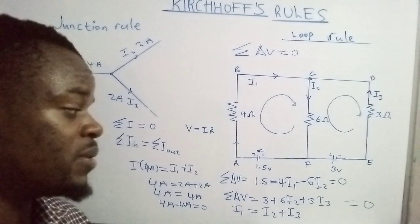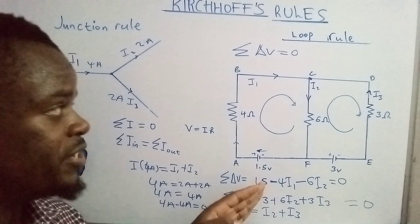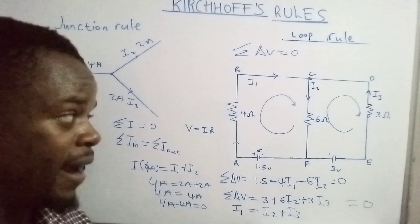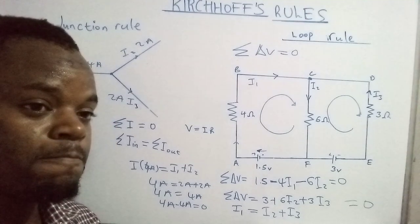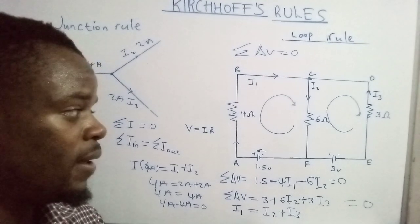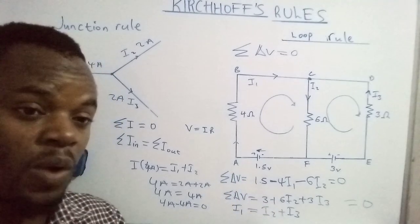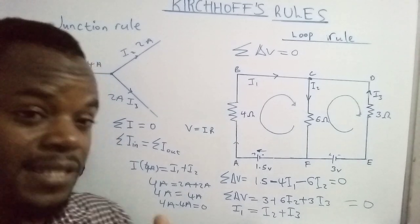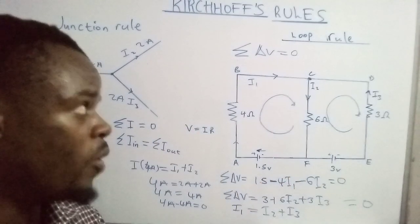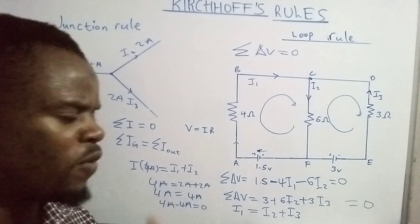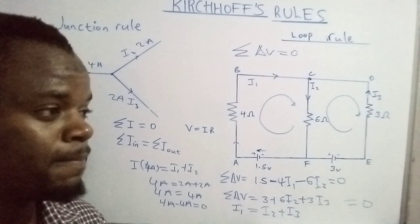To solve this problem and determine the unknown currents, you have to apply simultaneous equations. In the next video, I will show you how to apply these steps and rules to analyze complex electrical circuits and find those unknown values of current. If you liked the video, hit the like button, subscribe, and turn on the notification bell so you don't miss any videos on Kirchhoff's rules. Thank you so much for watching STEM Blast.